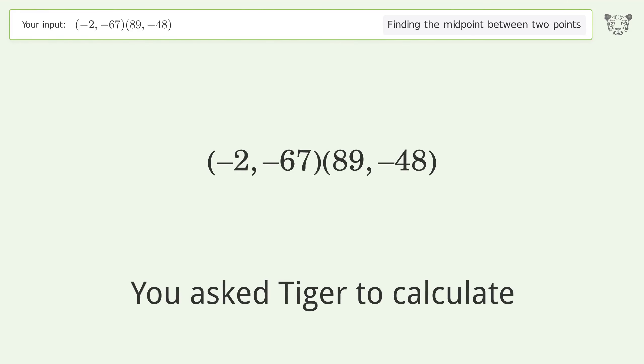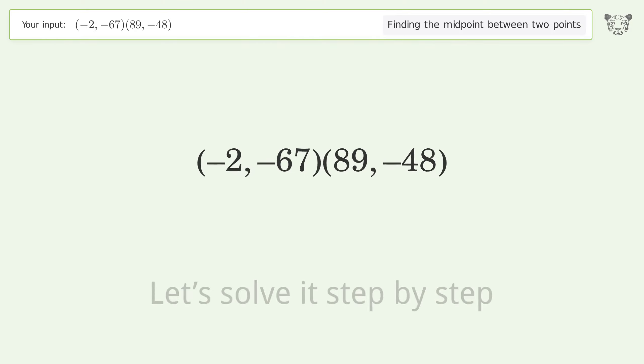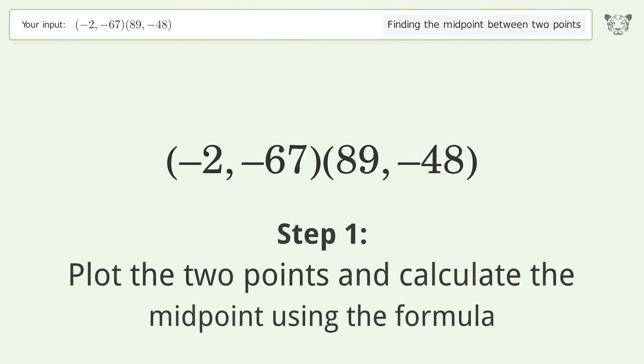You asked Tiger to calculate this. This deals with finding the midpoint between two points. The midpoint between the two points is (43.5, -57.5). Let's solve it step by step: plot the two points and calculate the midpoint using the formula.